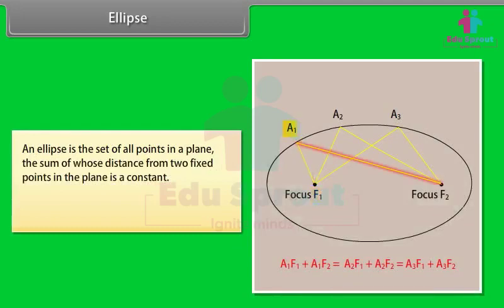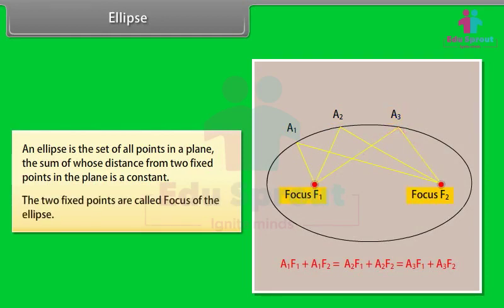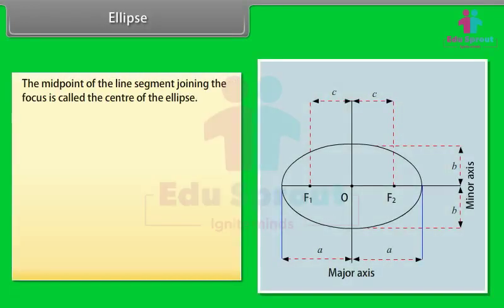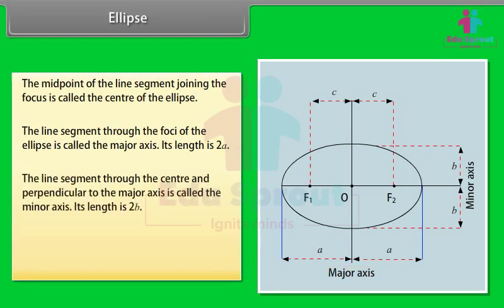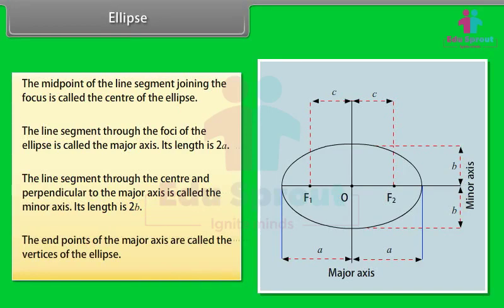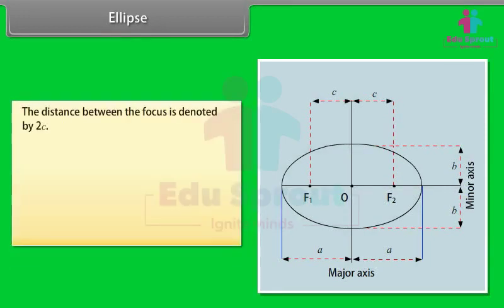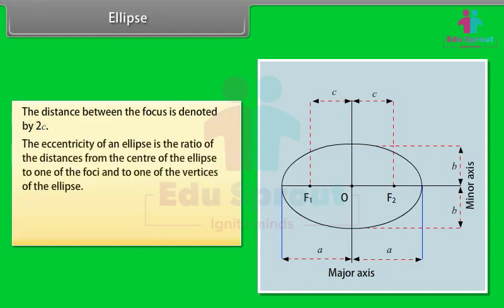An ellipse is the set of all points in a plane, the sum of whose distances from two fixed points in the plane is a constant. The two fixed points are called the foci of the ellipse. The midpoint of the line segment joining the foci is called the center of the ellipse. The line segment through the foci is called the major axis with length 2a. The line segment through the center and perpendicular to the major axis is called the minor axis with length 2b. The endpoints of the major axis are called the vertices. The distance between the foci is 2c. The eccentricity e = c/a.